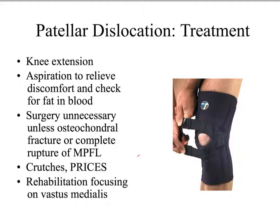Treatment for a patellar dislocation: initially for about seven days, the knee is locked in extension as a protective mechanism. As the knee moves from extension to flexion the patella glides superiorly, so locking the knee in extension stabilizes the patella and gives the static restraint structures time to heal down and tighten up — similar to an ankle sprain model. If after seven days the patient is still effused, the physician will aspirate to decrease pain and increase range of motion.